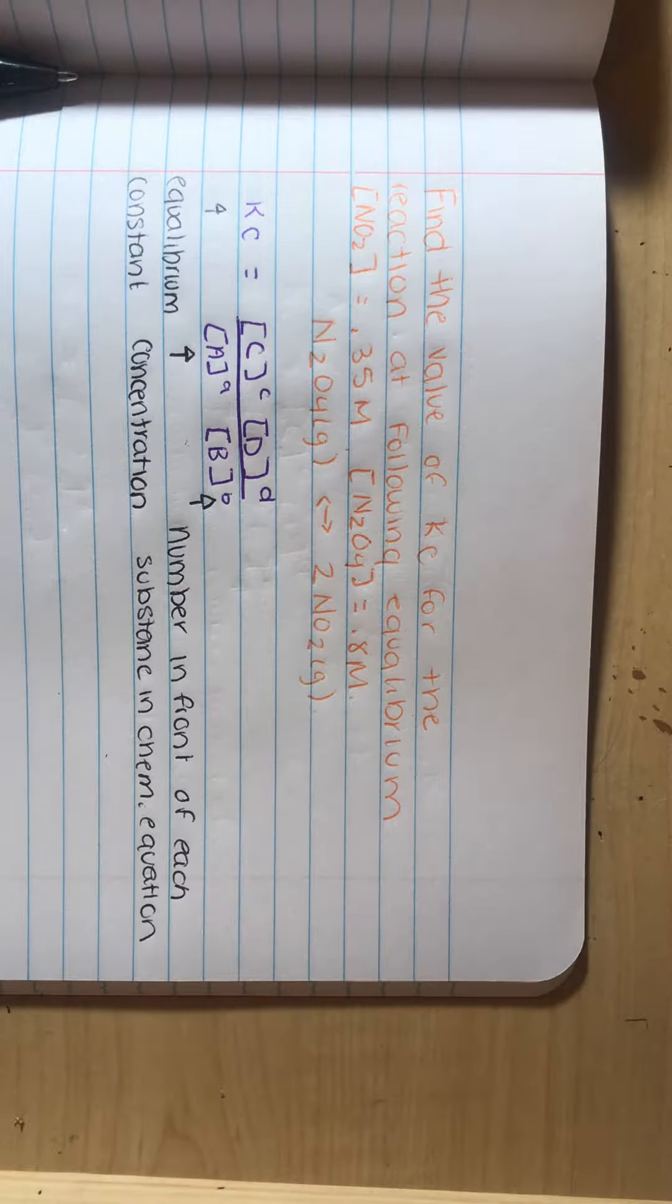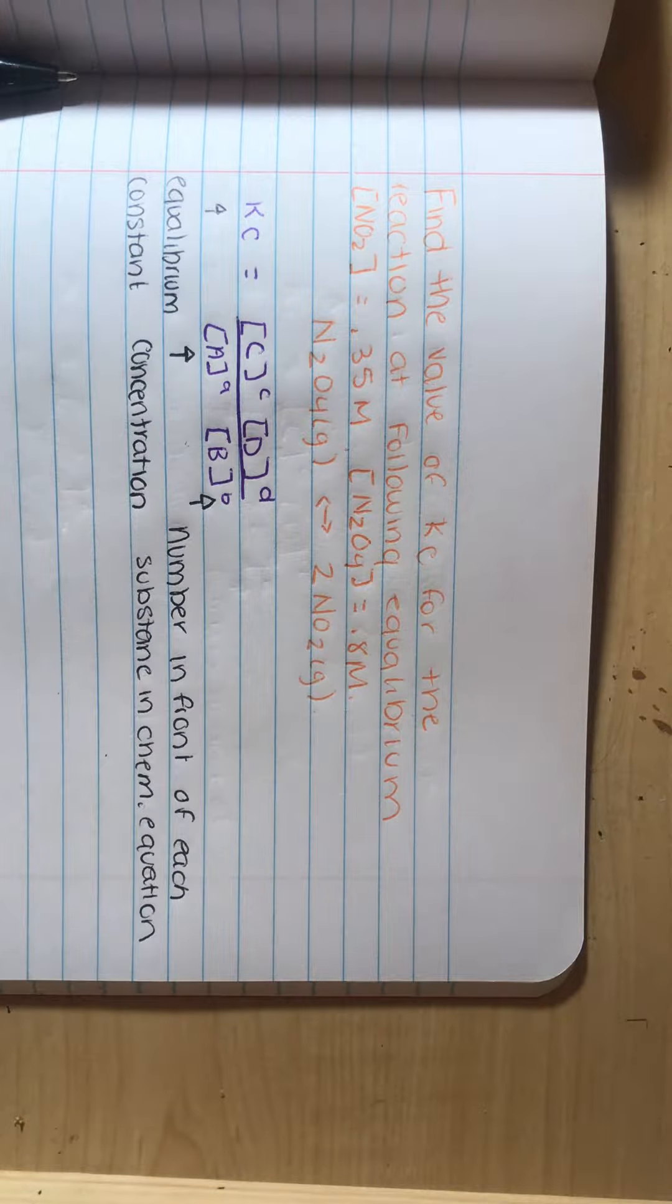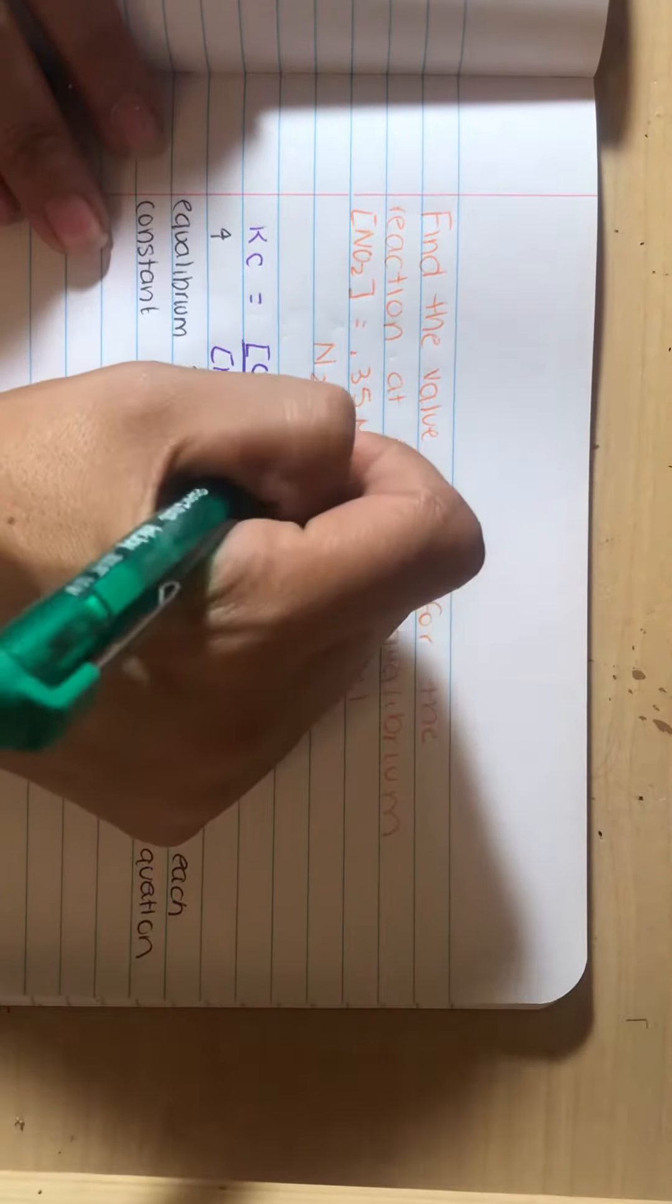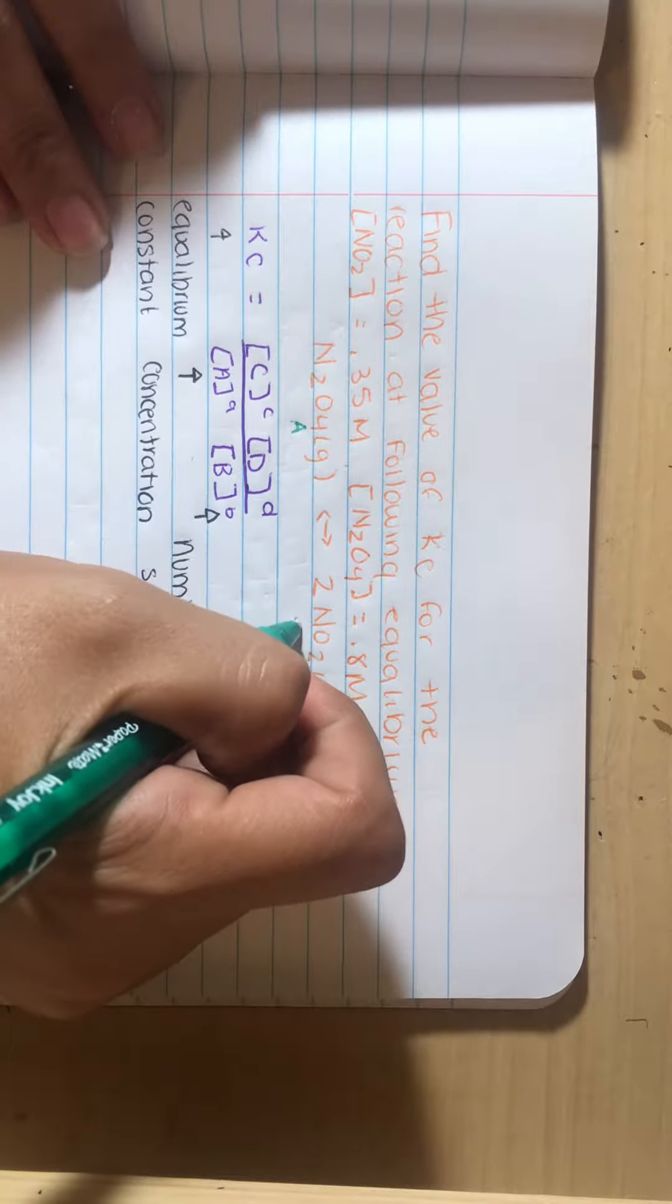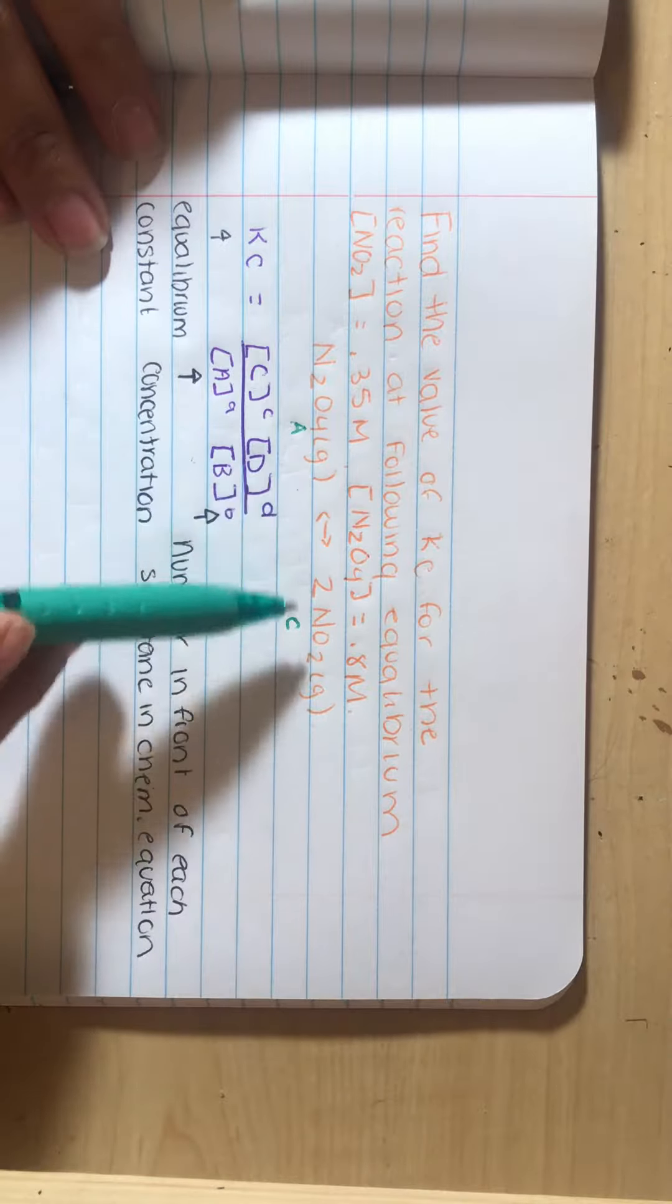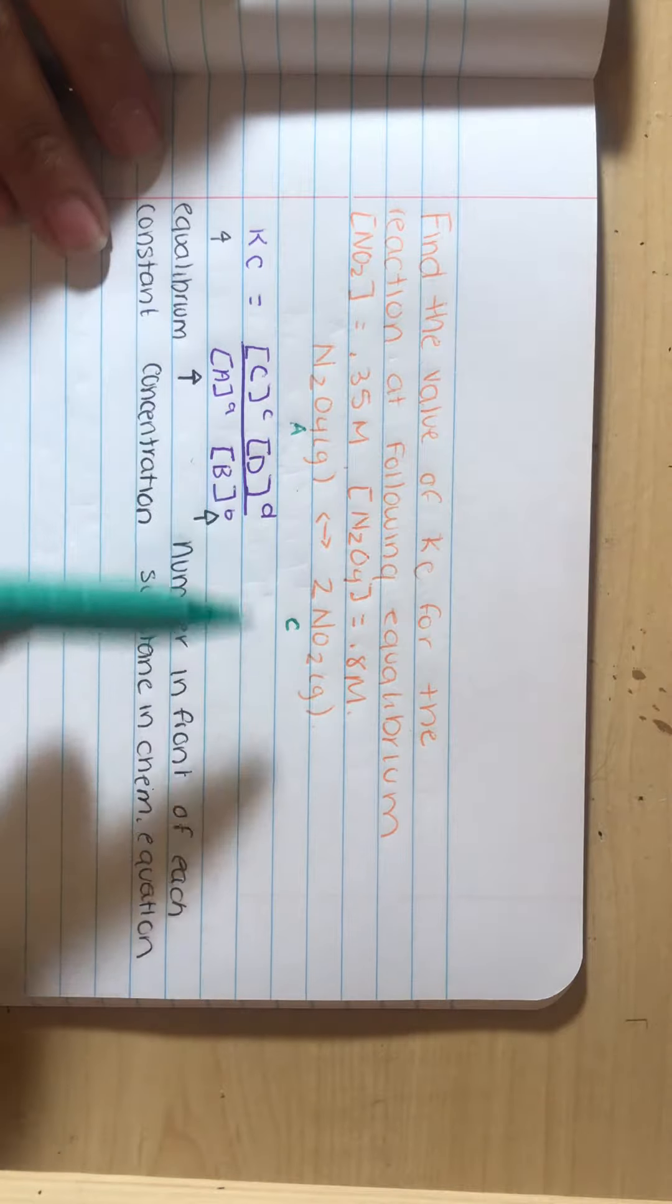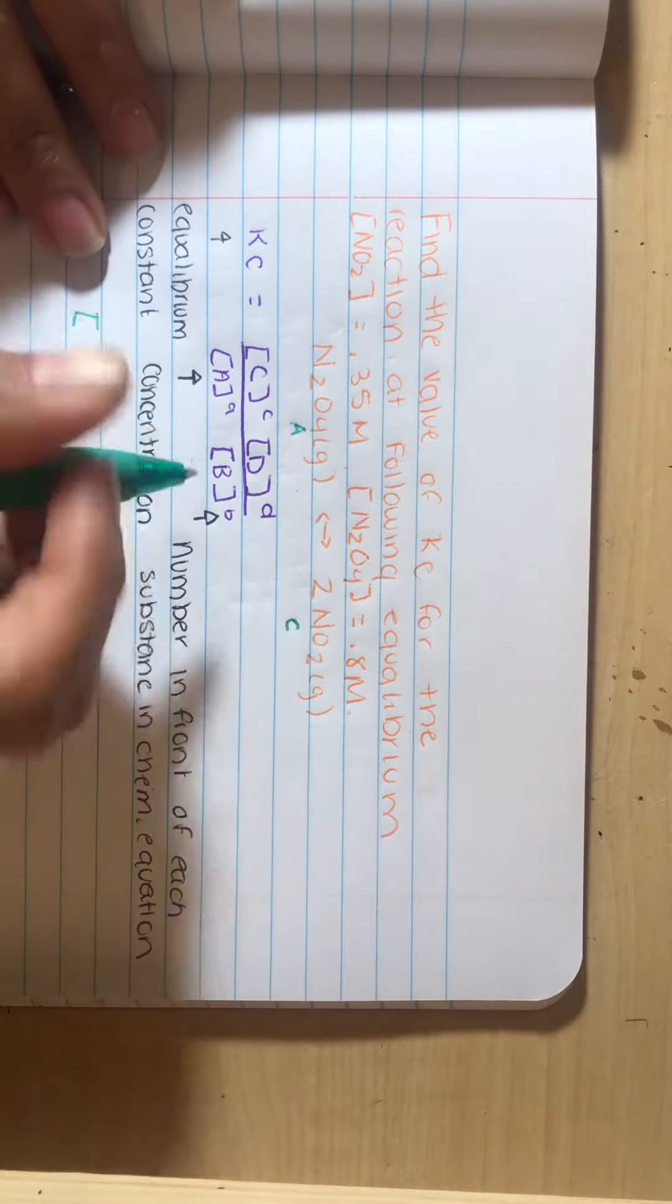We're going to start this off by labeling. This one is going to be A, and this one is going to be C. Since we don't have a B on this side of the equation, and we don't have a D on this side of the equation, these are the only two letters that we're going to be using.